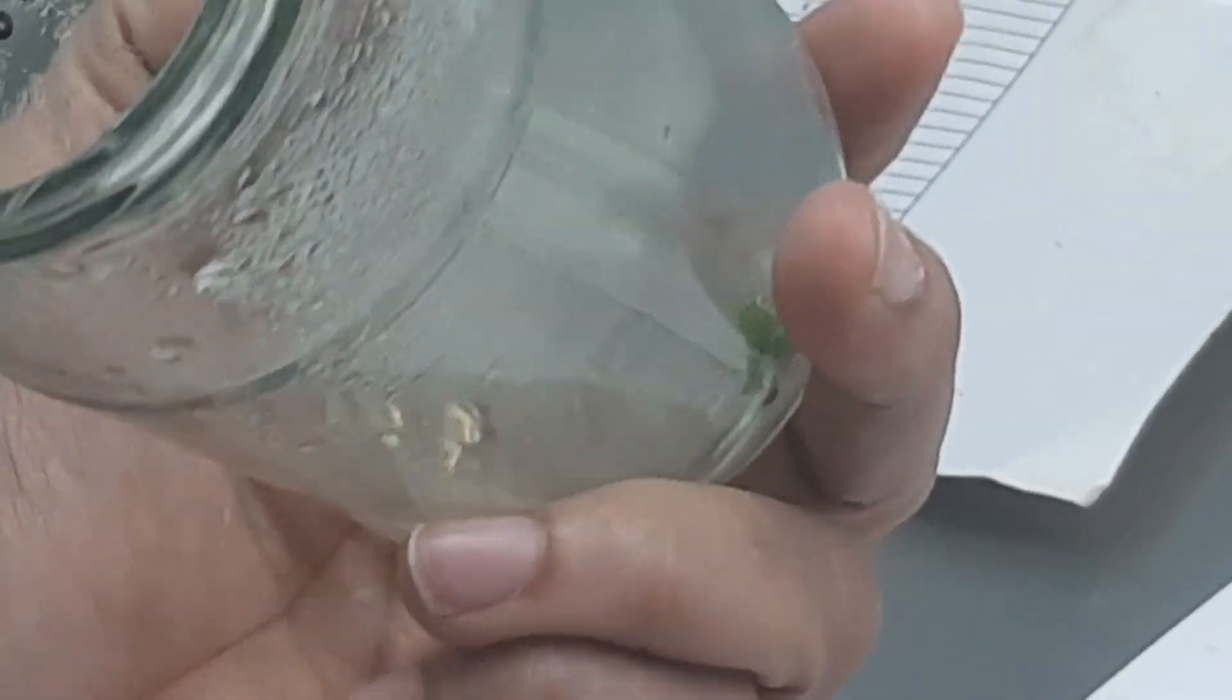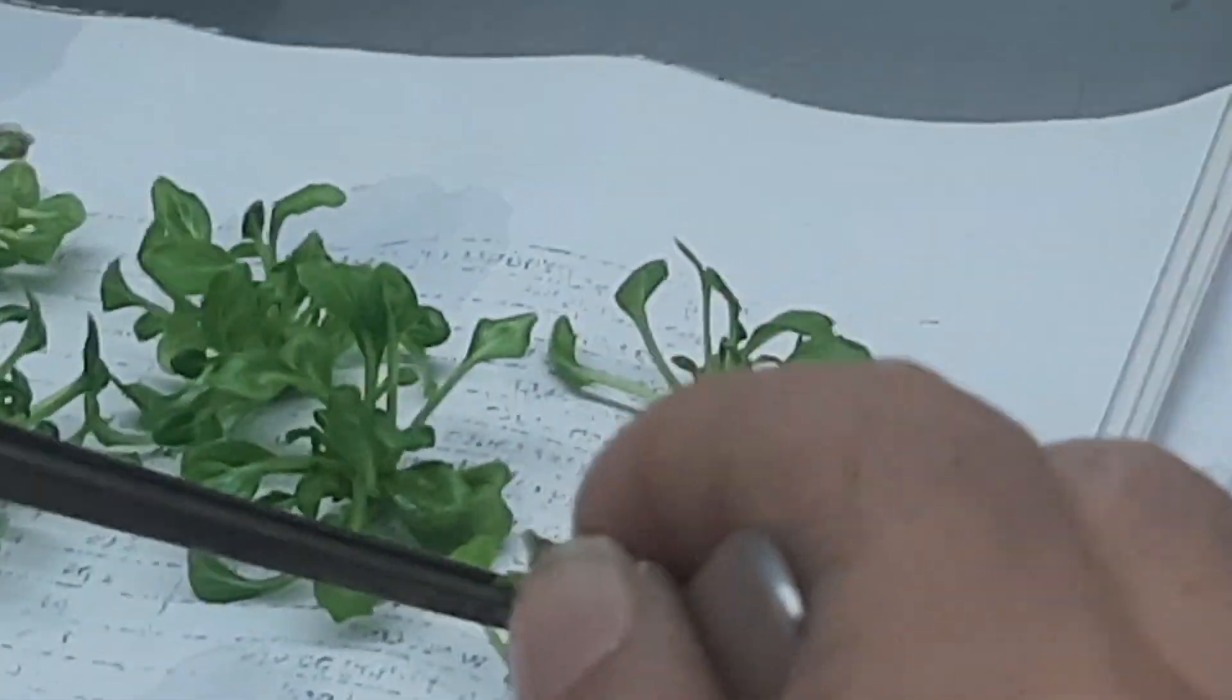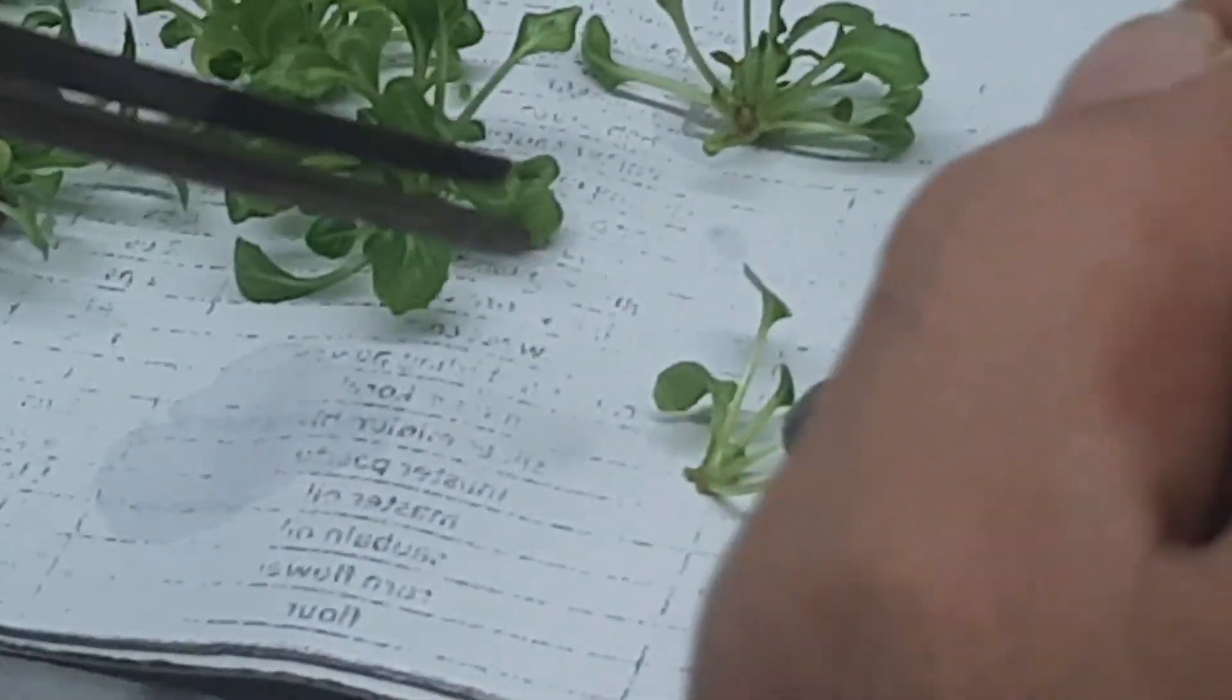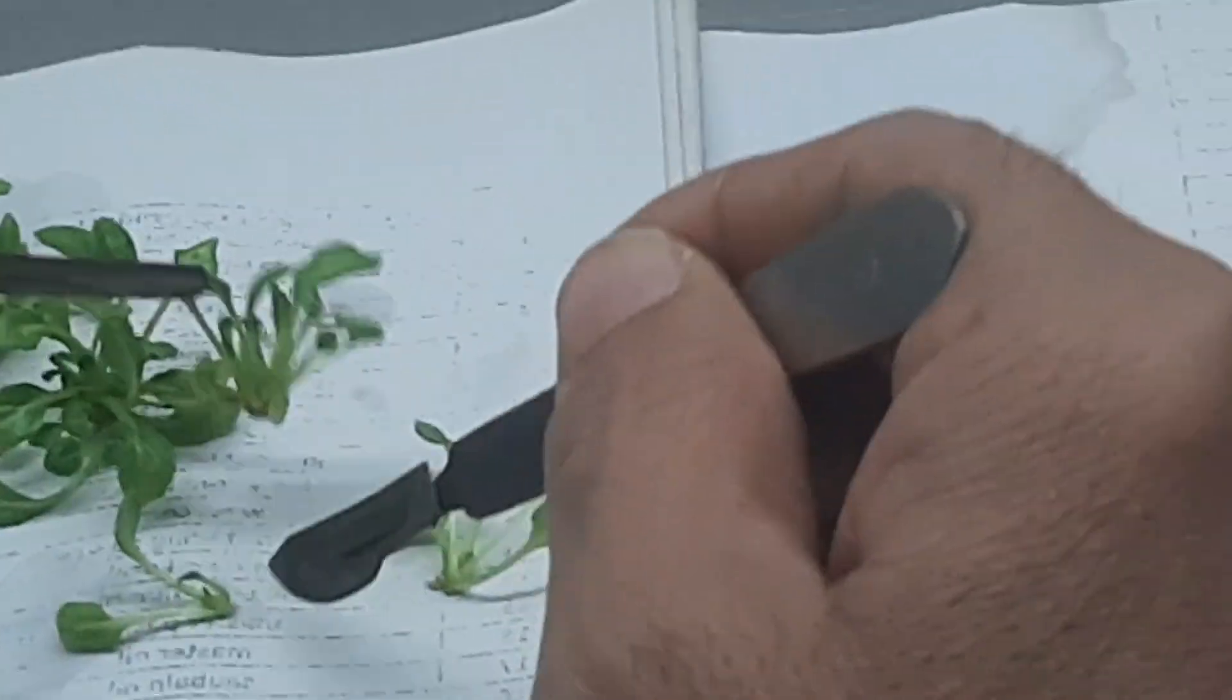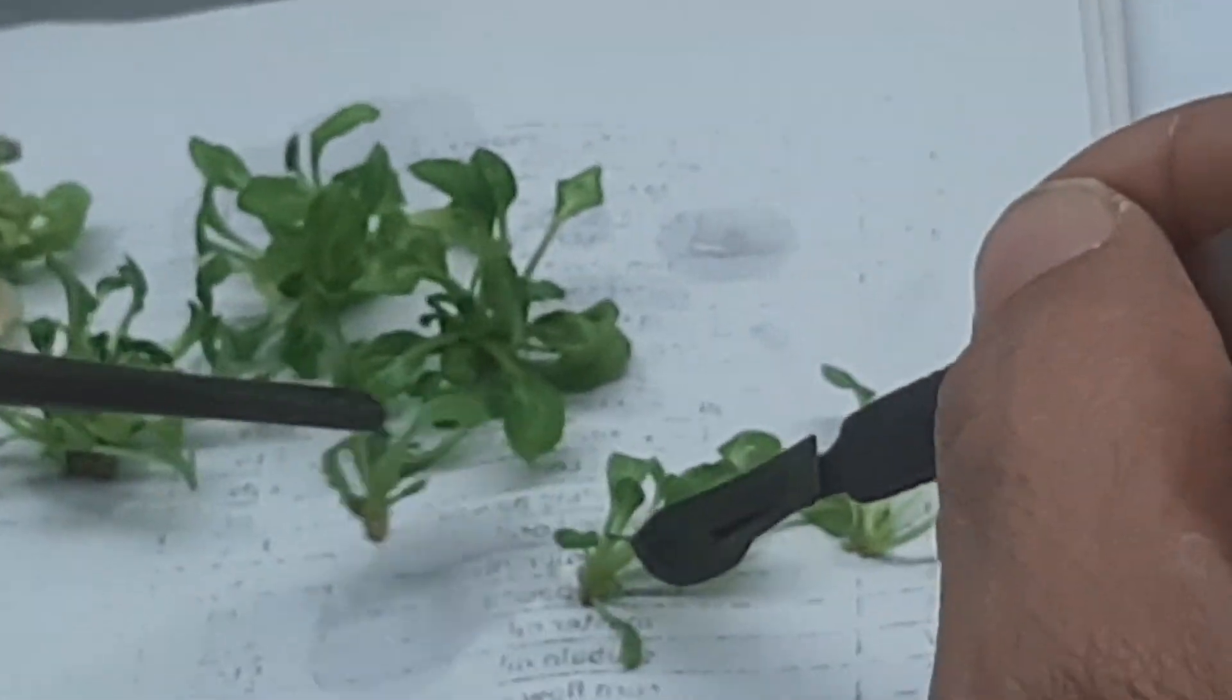Good afternoon viewers, welcome to another video. We will show you the procedures of inoculation. As you can see, these are the sterile plants developed through stem culture. We have developed these plants and now we are dissecting and dividing, actually splitting the multiple shoots for further inoculation.